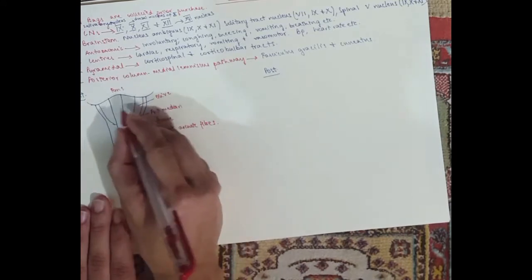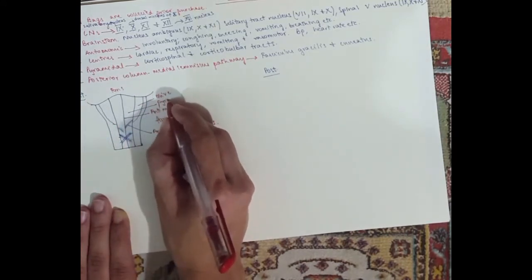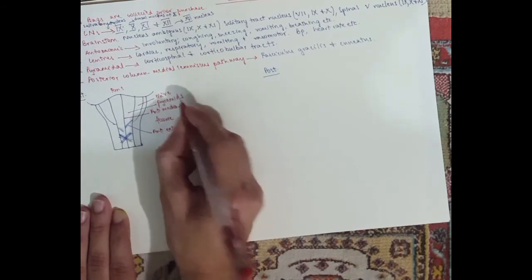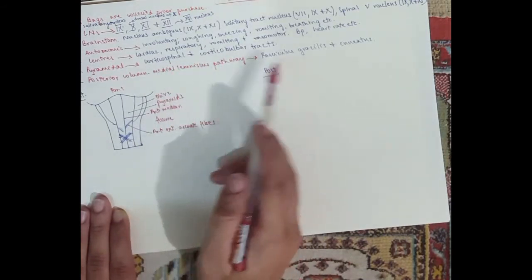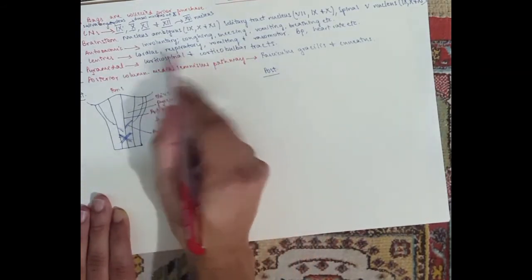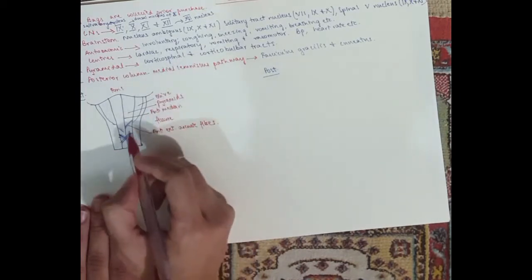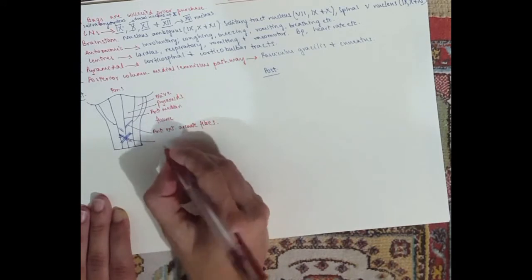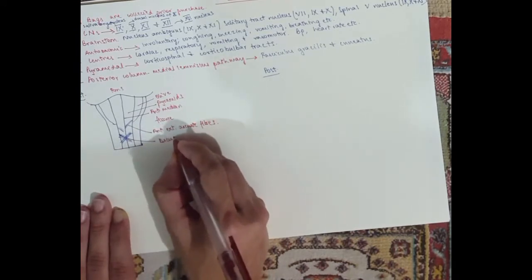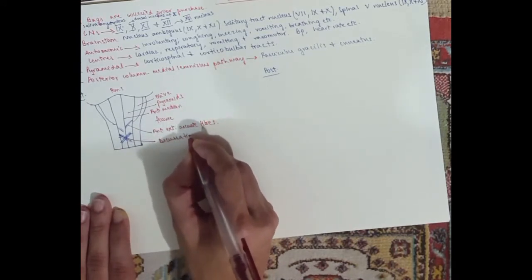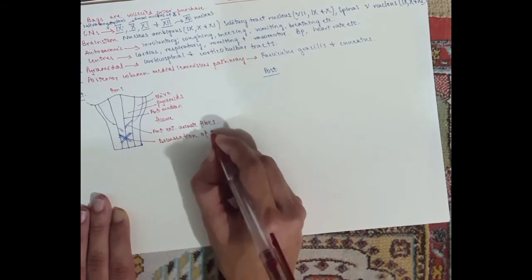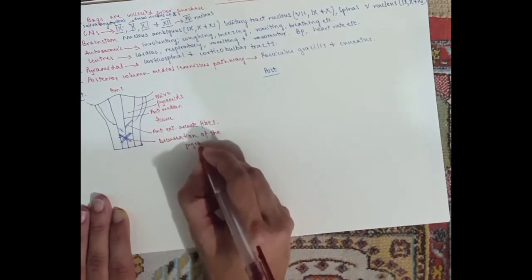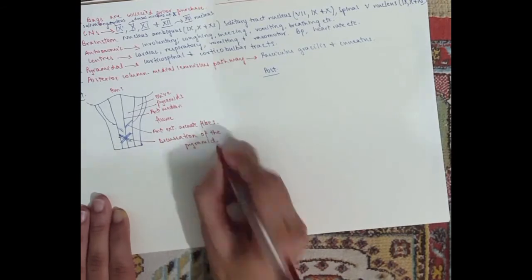Now these two are the pyramids, and they house the pyramidal tracts, which is the corticobulbar and the corticospinal tracts. The corticospinal ones especially cross sides, so they decussate in the medulla, so it's called the decussation of the pyramid. And that is the anterior view.